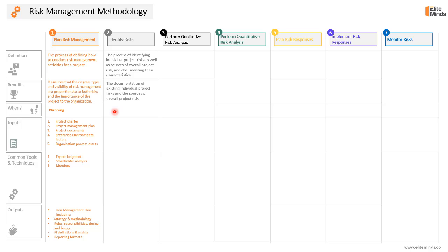The key benefit of this process is the documentation of existing individual project risks and the sources of overall project risk. We will focus not only on individual project risks but also on sources of overall project risk that impact more than one project objective. This process is conducted as part of the planning phase. We will need many project management plan components like the requirements management plan, schedule, cost, quality, resources, and risk management plan, in addition to the performance baselines.